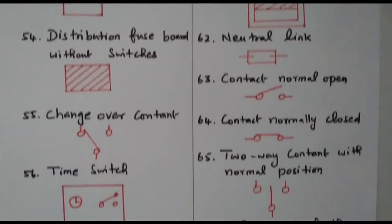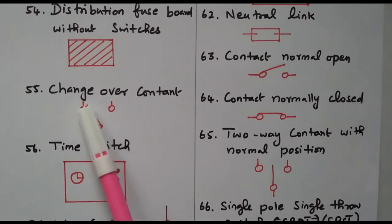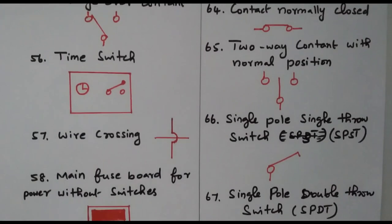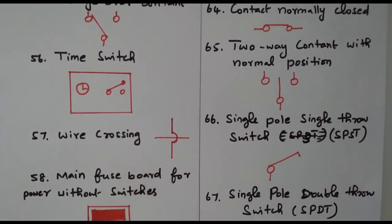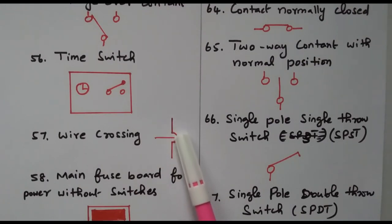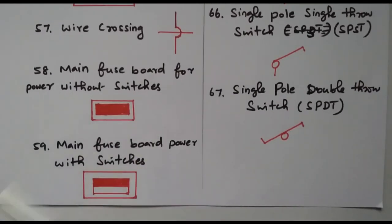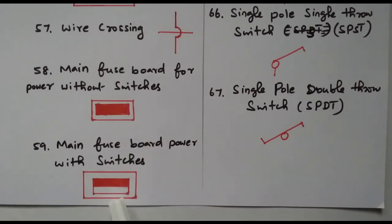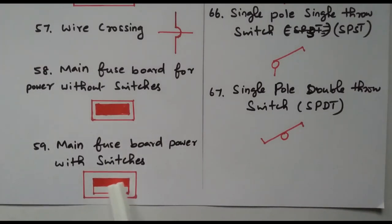Then change over contact allows you to change from one point to another — either connecting this side or that side, which is why it is called a changeover switch. The time switch closes based on time, with both time and contact symbols shown. Wire crossing indicates no connection between the two wires — one line runs over another with no contact. For main fuse board with two boxes: one box means distribution box; fully shaded means without switch, partly shaded means with switch.